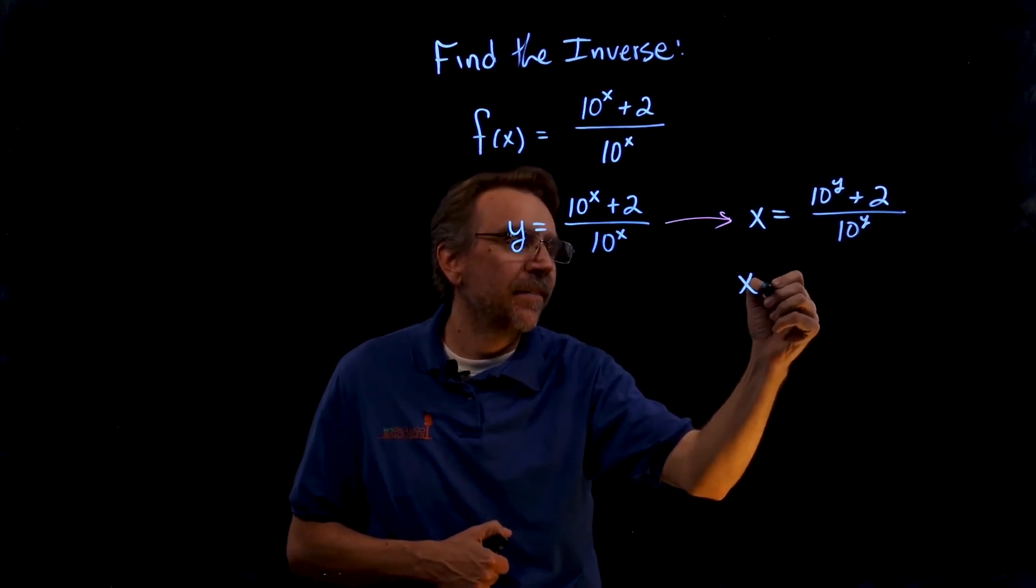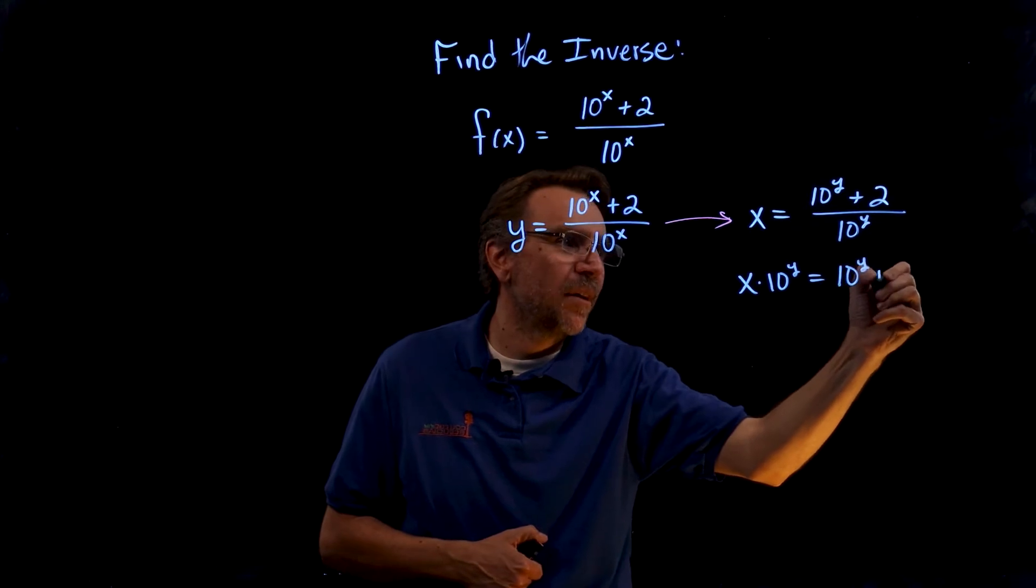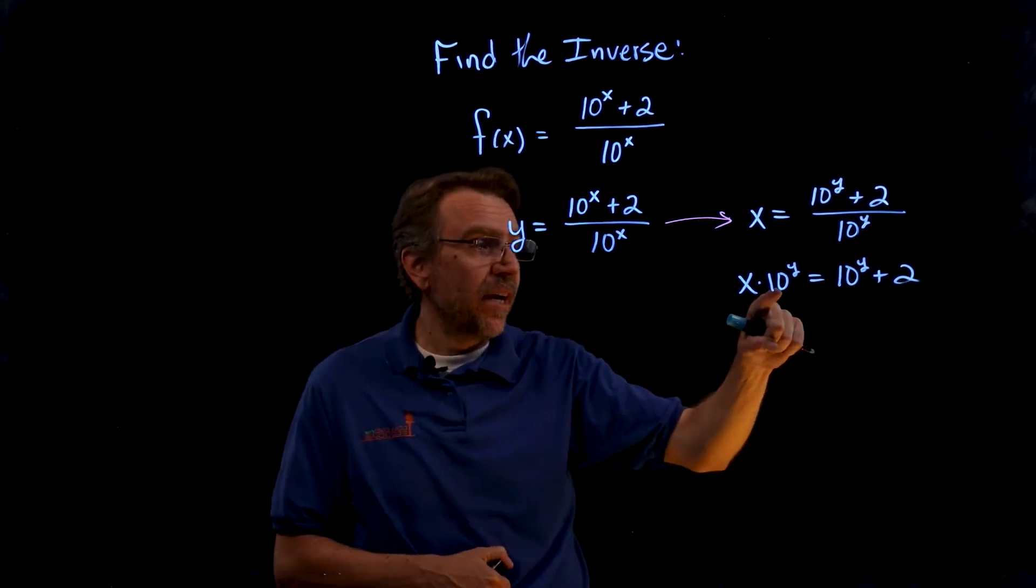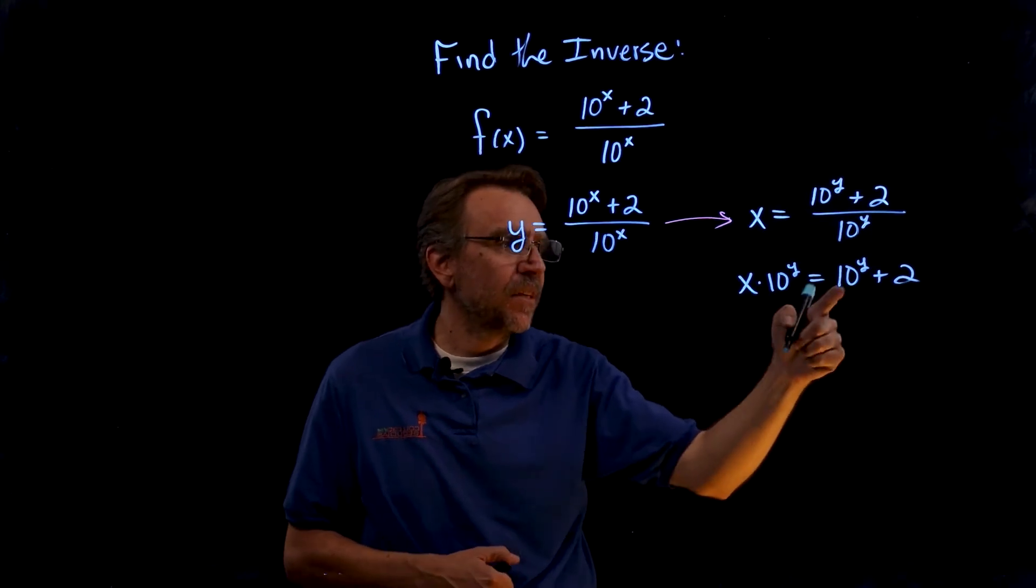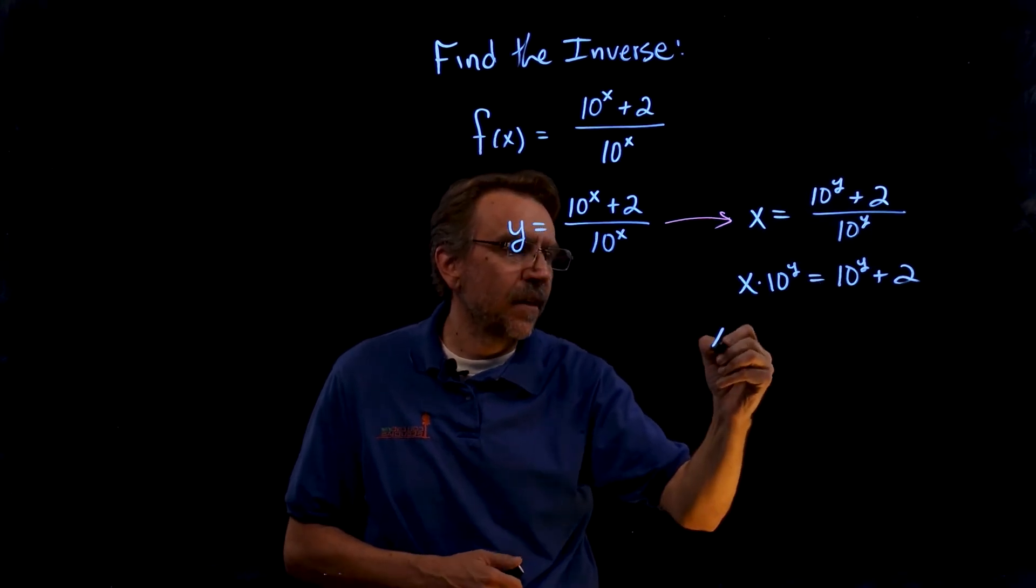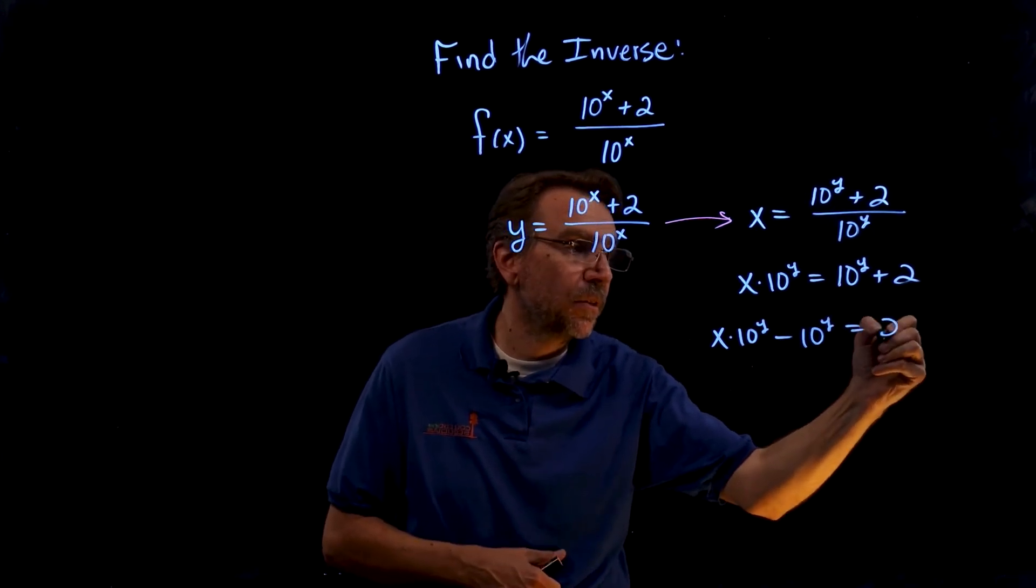So cross multiplying, we have x times 10 to the y equals 10 to the y plus 2. At this point I have 10 to the y on both sides, so I'm going to get those terms on the same side. I'm going to subtract 10 to the y, and that will give us x times 10 to the y minus 10 to the y equals 2.